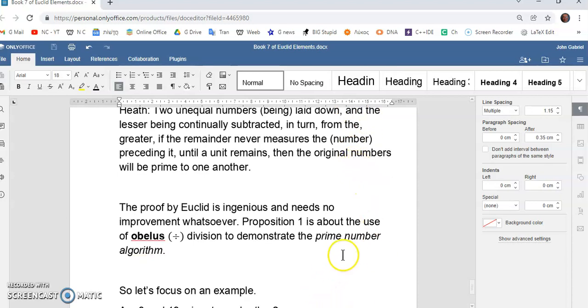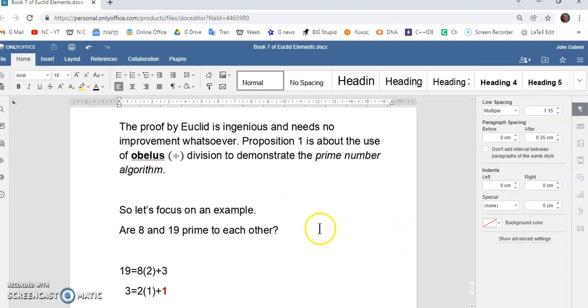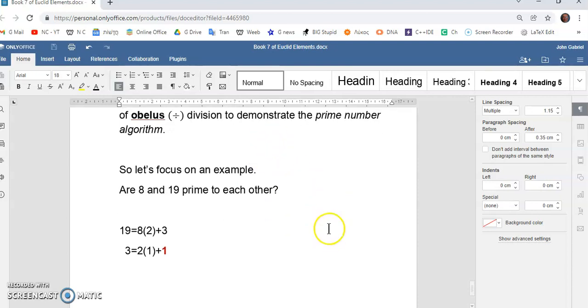So, the proof by Euclid is ingenious and needs no improvement whatsoever. So, the proposition is about the use of obelisk division, which is what I've just explained to you, to demonstrate the prime number algorithm.